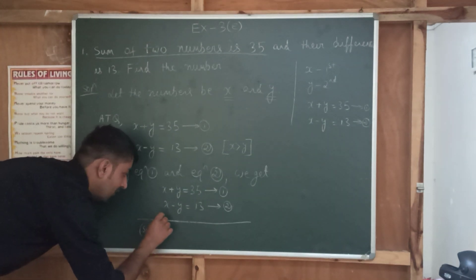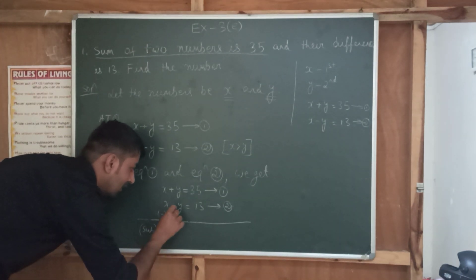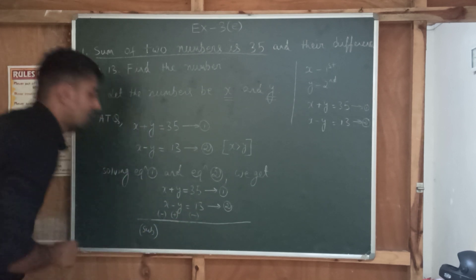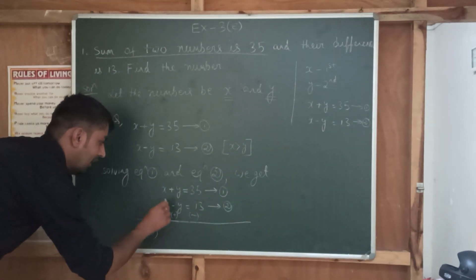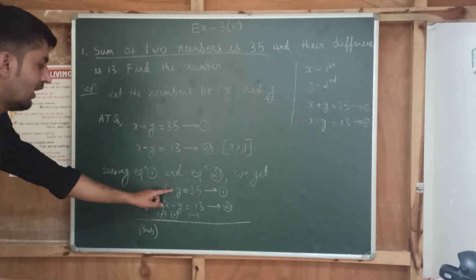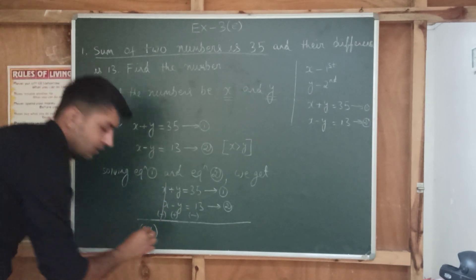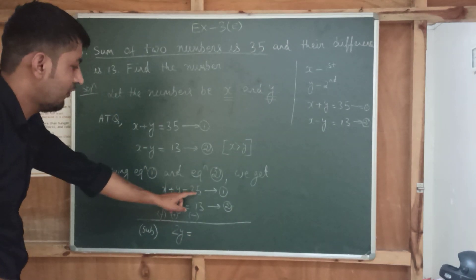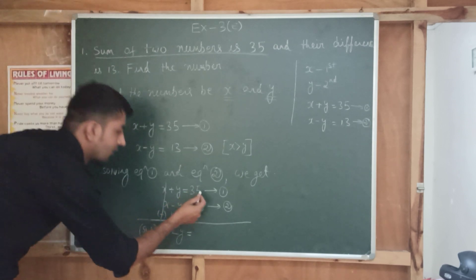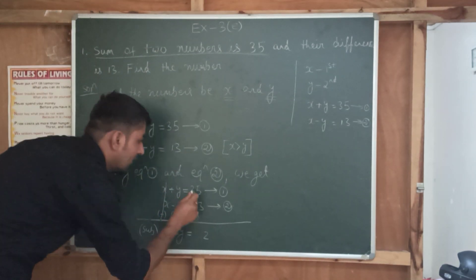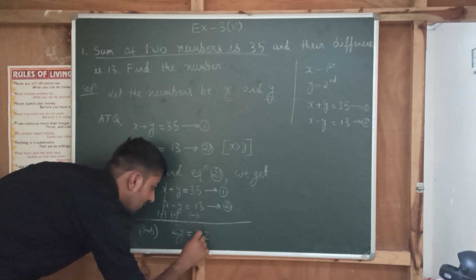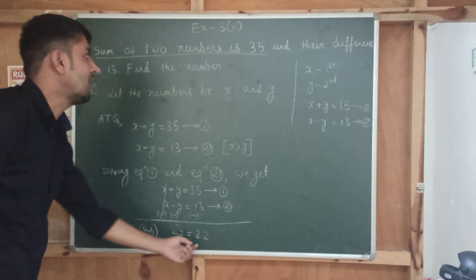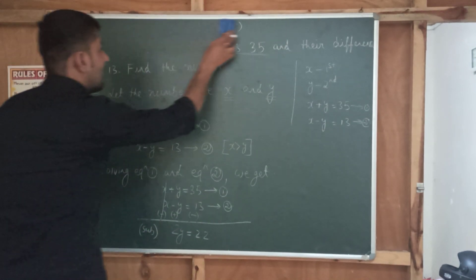When you subtract, there is a change of sign — plus becomes minus, and minus becomes plus. The X terms cancel out. Y plus Y will be 2Y. Then 35 minus 30 gives you 5, so you get 2Y is equal to 5. Wait — let me correct: you are getting 2Y is equal to 22.